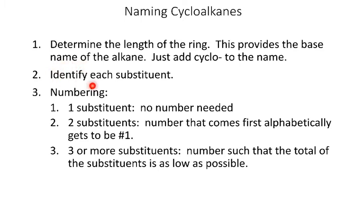Then we look and identify each substituent, and then we have to worry about the numbering. Now if there's just one substituent, we don't need a number because we just assume that whatever position it's on, we'll call that one. So because the one is understood, if there's just one substituent, we don't need a number.